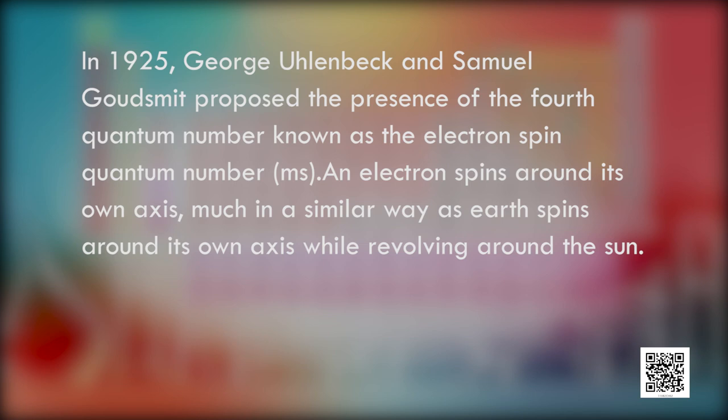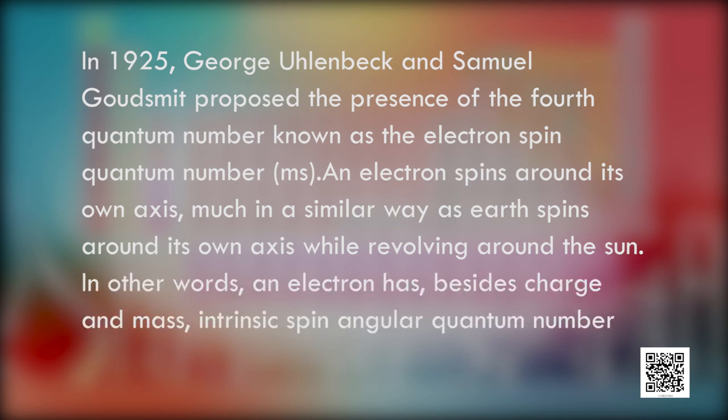An electron spins around its own axis much in a similar way as the Earth spins around its own axis while revolving around the Sun. In other words, an electron has, besides charge and mass, an intrinsic spin angular momentum, which is a vector quantity. It can have two orientations relative to the chosen axis, distinguished by the spin quantum number MS, which can take two values: plus one-half or minus one-half — that is, whether the electron is spinning anticlockwise or clockwise. These are called the two spin states of the electron, normally represented by two arrows: spin up and spin down. Two electrons with different MS values — one plus one-half and the other minus one-half — are said to have opposite spins.